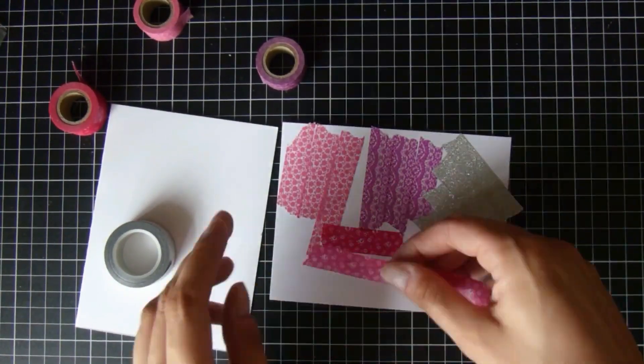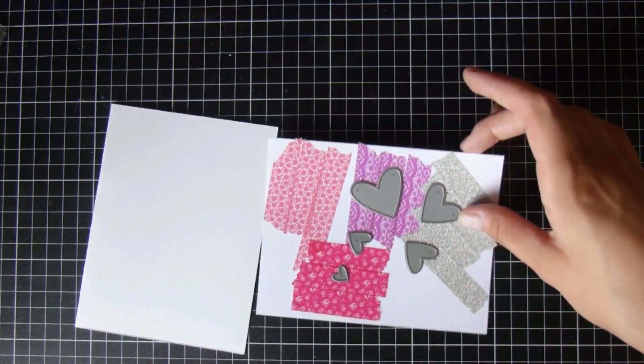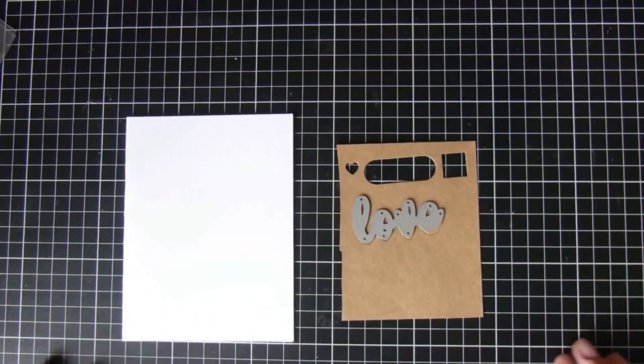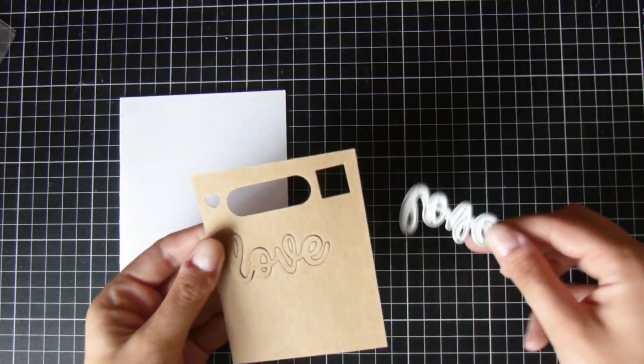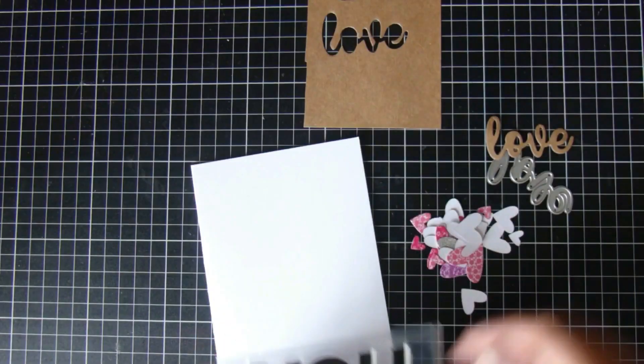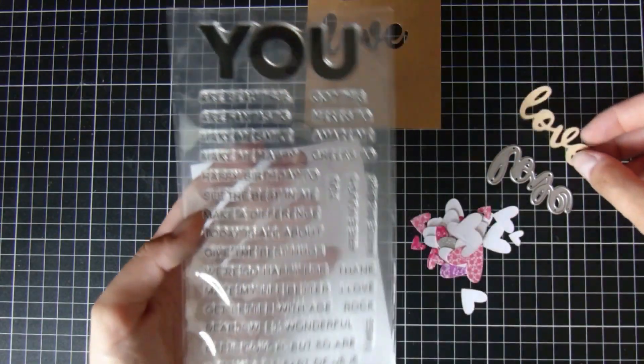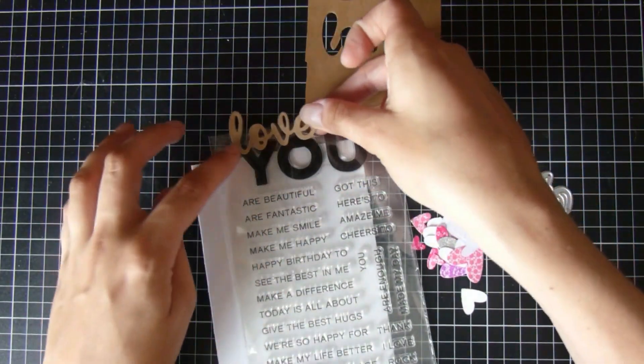I have these hearts here—I can't remember where I got these from, but I'm sure you have some too. I've also got this love die, which is from AliExpress, which I will try and link below if I can still find it. And then I have this 'you' stamp set.